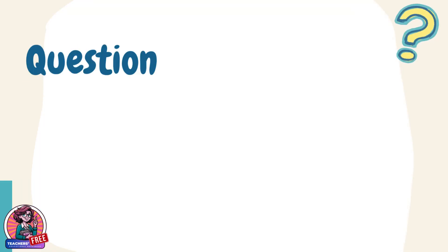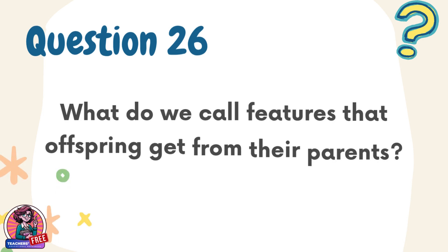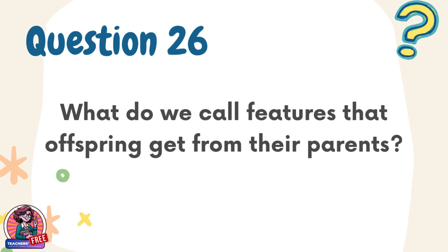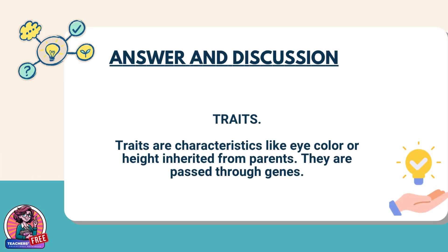Question 26. What do we call features that offspring get from their parents? Answer: Traits. Traits are characteristics like eye color or height inherited from parents. They are passed through genes.